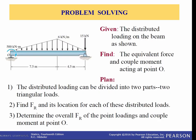Now we have two triangular loads on this beam. We also have an applied load of 15 kilonewtons and a couple moment of 500 kilonewton-meters. Find the equivalent force and couple moment acting at point O. We're going to divide the distributed loading into two triangular regions, find the resultant force and its location for each, then determine the overall resultant force of the point loading and couple moment at point O.